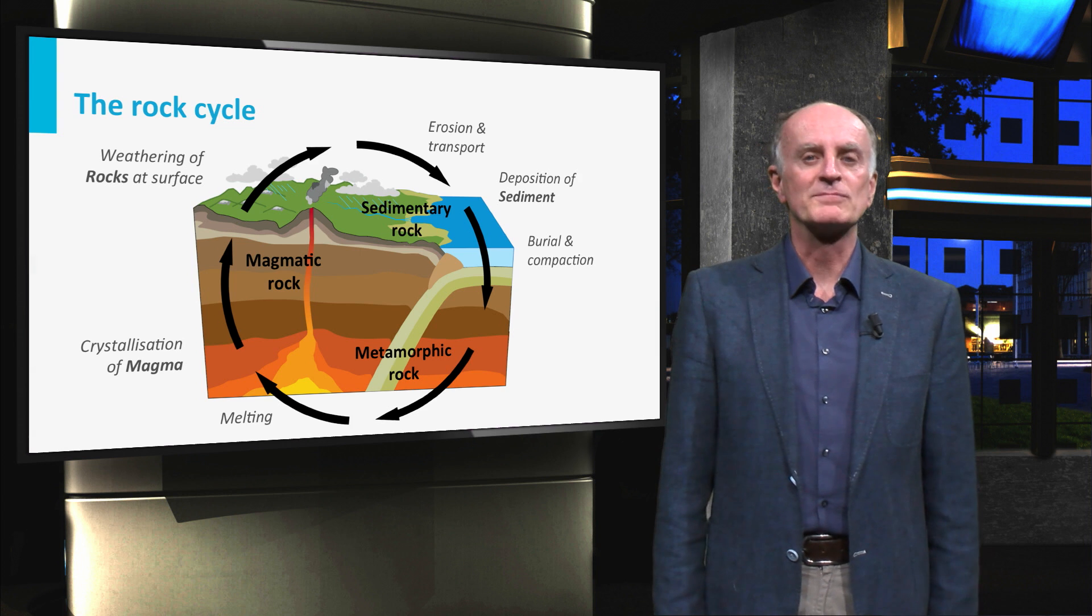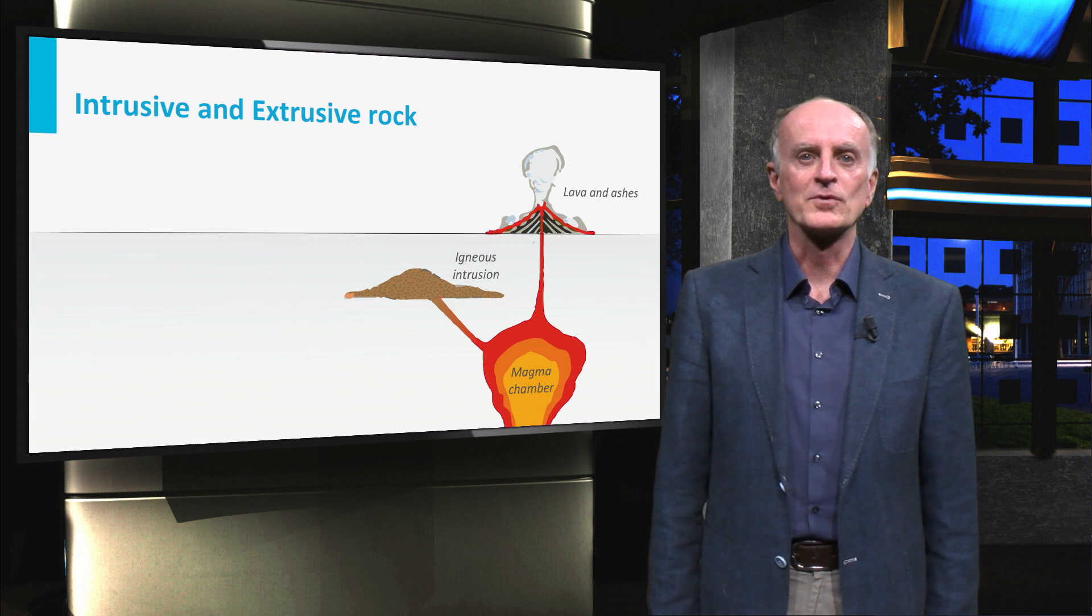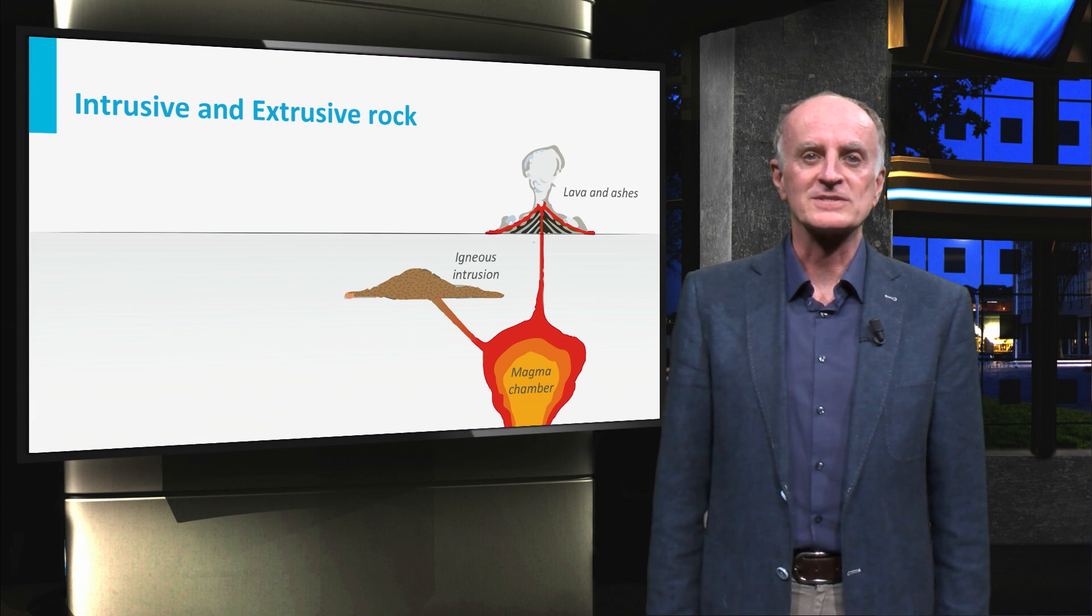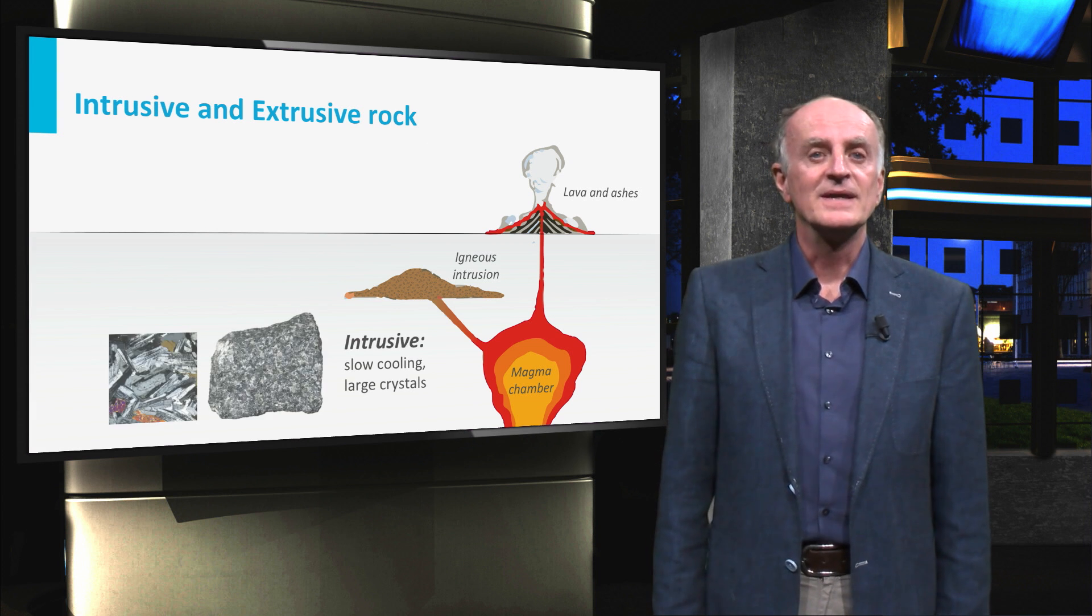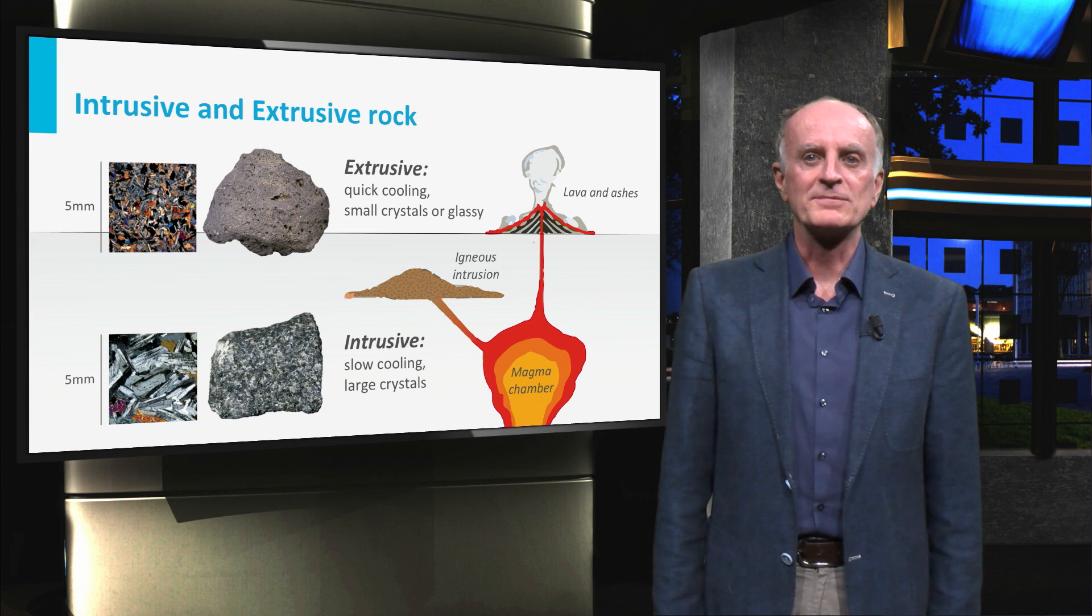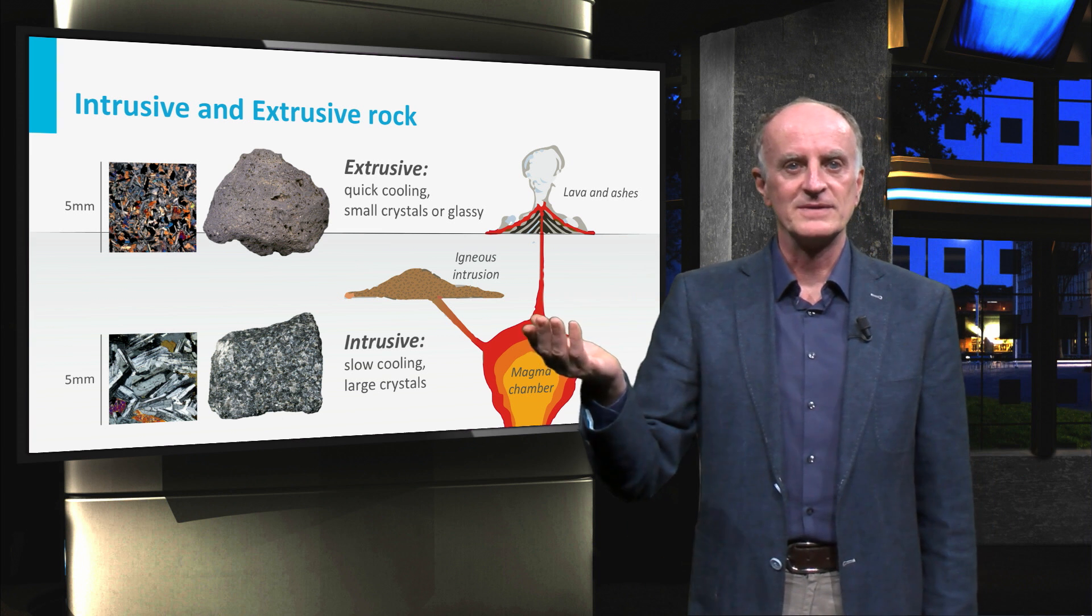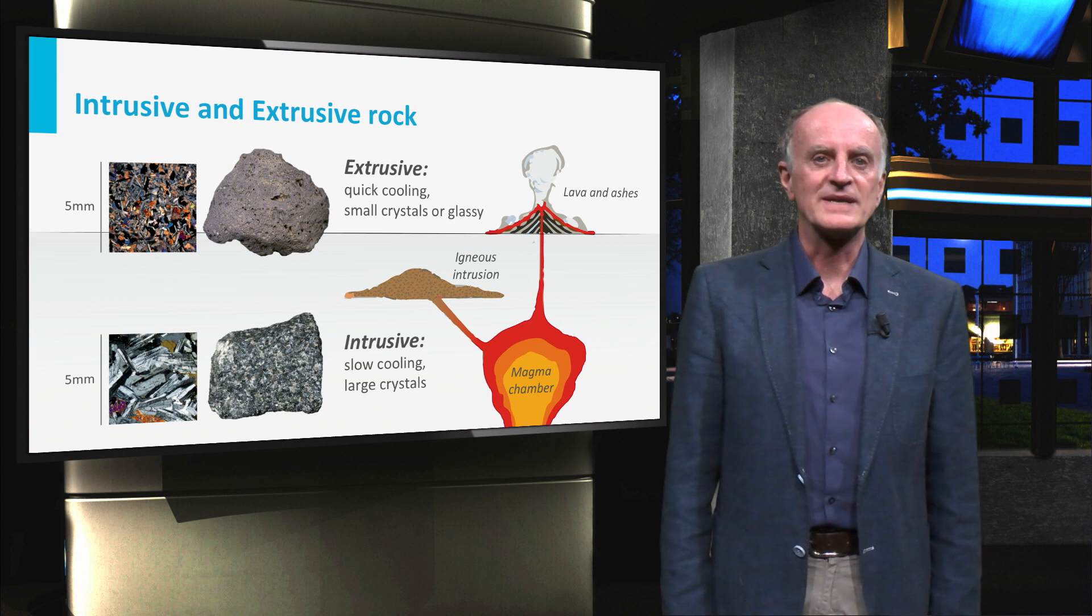We will start our journey with magmatic rocks, which form from the consolidation of magma at depth or at the surface of the Earth. These two types of rocks are very different and are named intrusive and extrusive. You will see more of this in the coming slides.